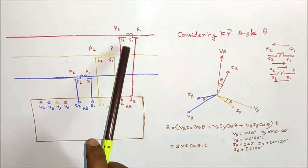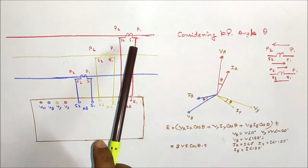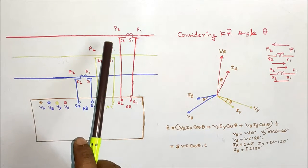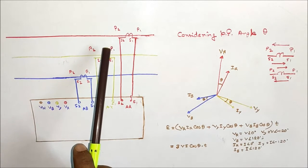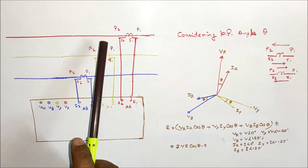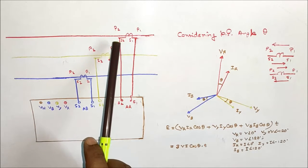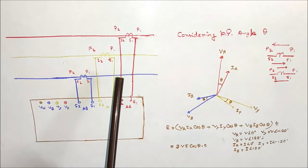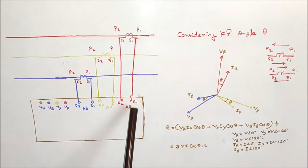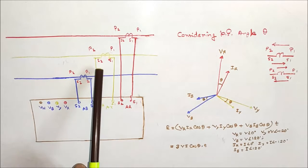The CT primary connection is shown here: P1 shall be connected towards the bus side and P2 towards the line or feeder side. For a transformer, P1 shall be connected towards the bus side and P2 towards the transformer side. For a feeder, load will flow from P1 to P2, and for a transformer, incoming load will flow from P2 to P1.